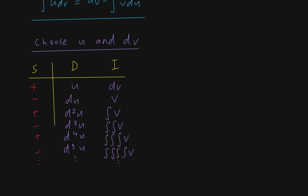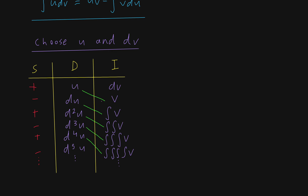These are three columns. When you apply the formula multiple times, the integral of v du still has a product, so you apply the rule again. It already has a negative in front of it, so it changes to a positive, and the signs keep alternating. The special thing you can do is take the product of the diagonals — these diagonal products are your fragments of the integration by parts. You have u times v, and normally the remainder would be the integral of v du, which gets subtracted.